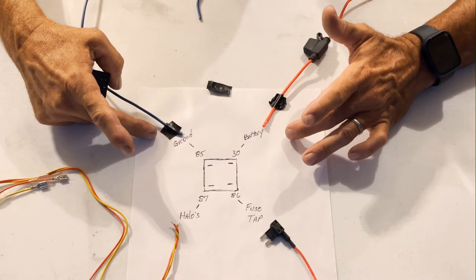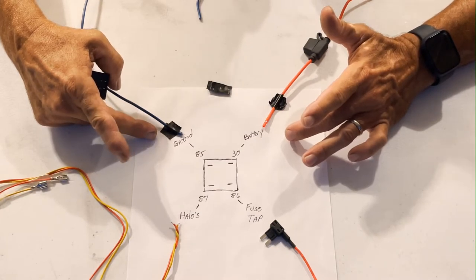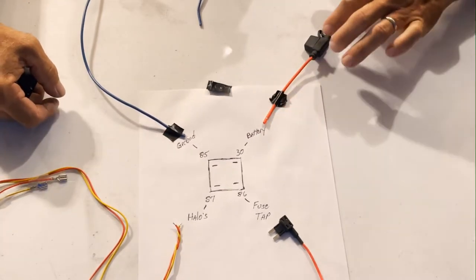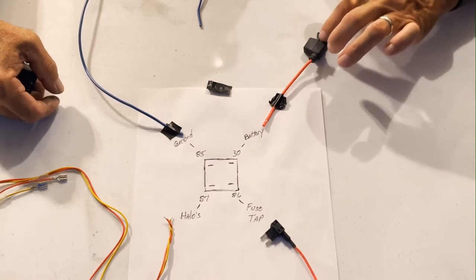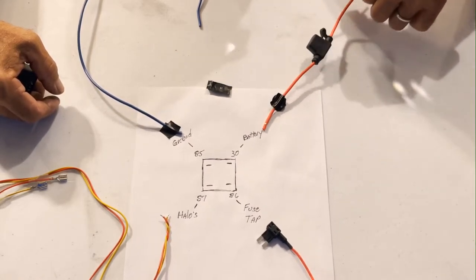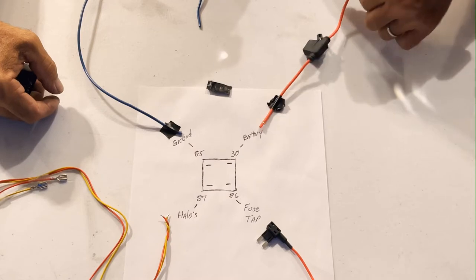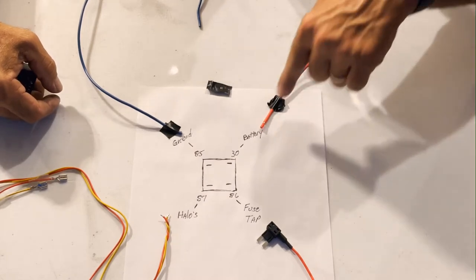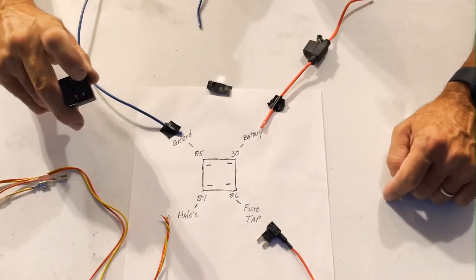You can go straight to the battery negative terminal if you want and then this battery positive terminal and you put an inline fuse in it. So you get yourself an inline fuse just like this. You go from the battery to pin 30 right here.